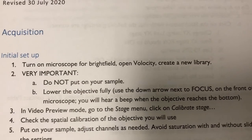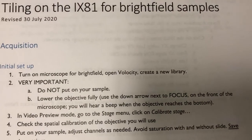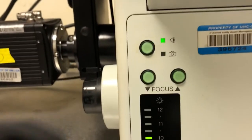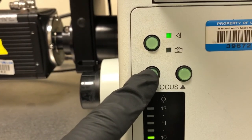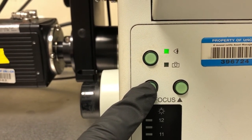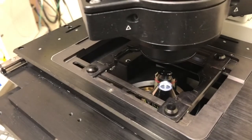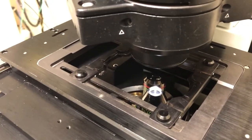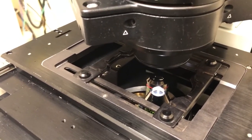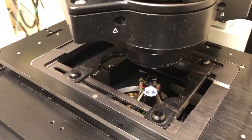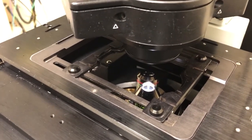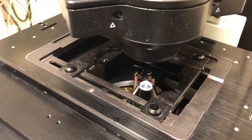Very important: do not put on your sample yet. Instead, we want to lower the objective fully using the down arrow next to focus — press this until it beeps. What we've just done is lower the objective completely. This lowers it even more than escape, and you'll see why that's important: we're going to do a calibration that moves the stage quickly across its full range.